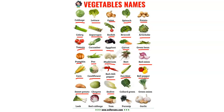Endive. Endive. Collard green. Collard green. Green onion. Green onion. Leek. Leek. Red cabbage. Red cabbage. Yam. Yam. Parsnip. Parsnip. Garlic. Garlic.